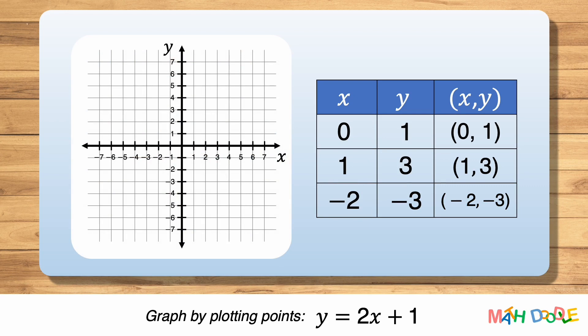Now, let's plot these three points in a coordinate system. After plotting these, we can see that the points line up. Let's draw the line through these points and put arrows on both ends. This is the line of y equals 2x plus 1.